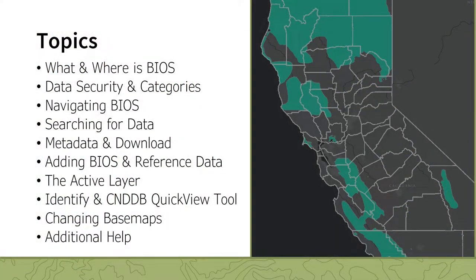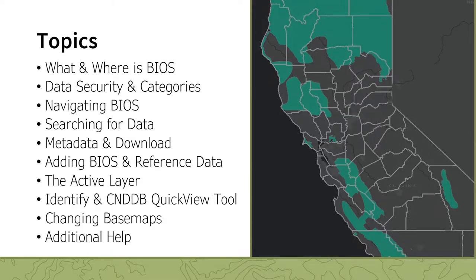In this lecture, we will cover the following topics: what BIOS is and how to access it; data security and categories; navigating BIOS; searching for data; viewing metadata and downloading data; adding BIOS and reference data; working with the active layer; working with the Identify Features tool and California Natural Diversity Database CNDDB QuickView tool; changing basemaps; and where to find additional help.